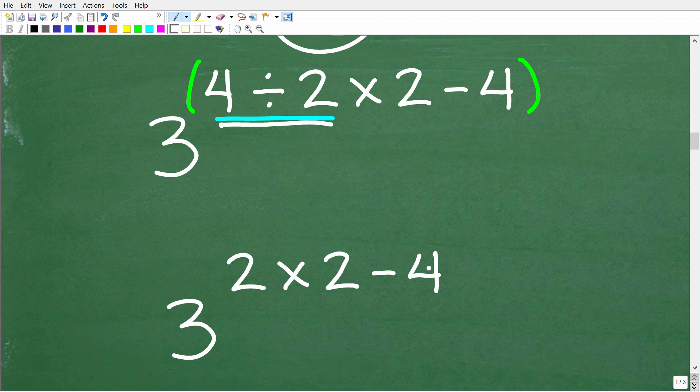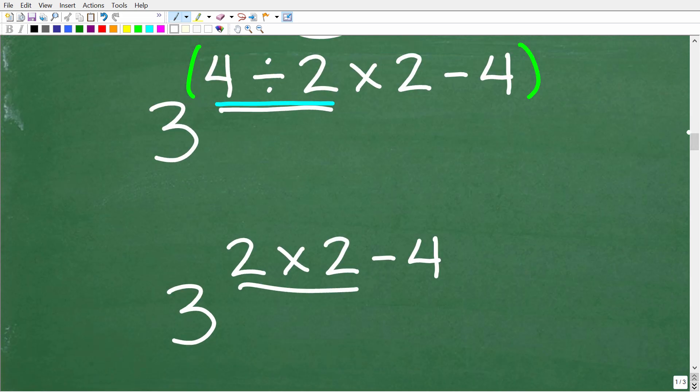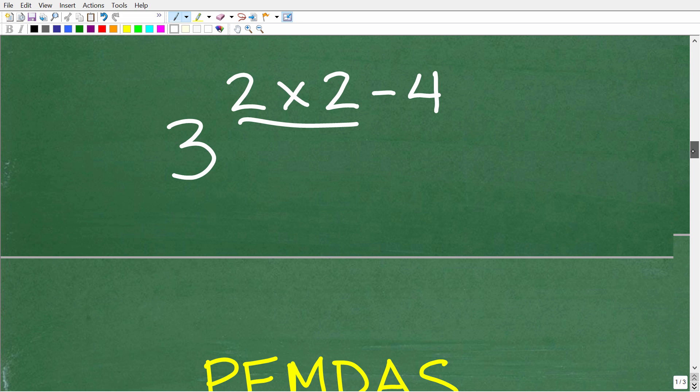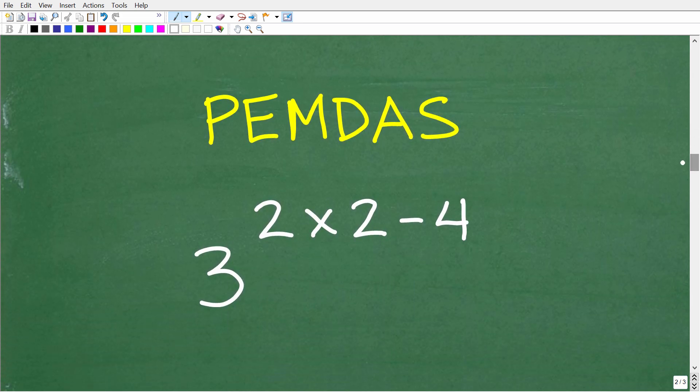Now our problem is 3 to the 2 times 2 minus 4 power. You want to reference your PEMDAS checklist and take care of all multiplication and division before you move on to addition and subtraction. Here we have to figure out what 2 times 2 is before we take the next step.